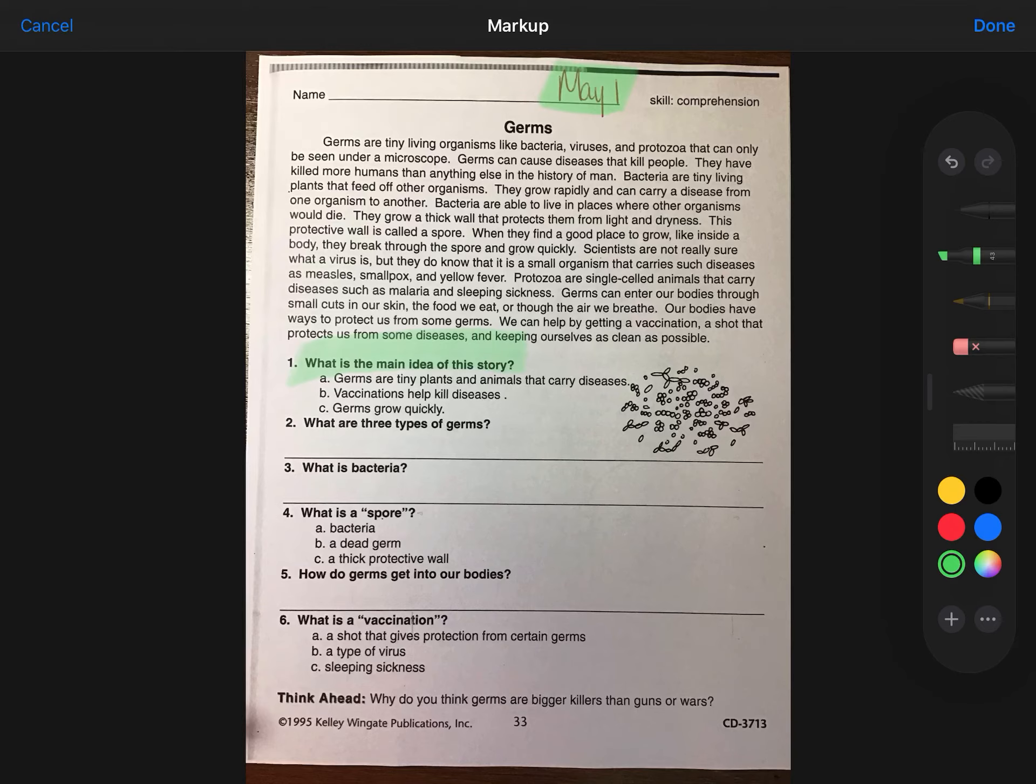Okay, number one, what is the main idea of this story? A, germs are tiny plants and animals that carry diseases. Sounds good. B, vaccinations help kill diseases. The whole paragraph was not about vaccinations, so that's not the main idea. So I'm going to eliminate B.